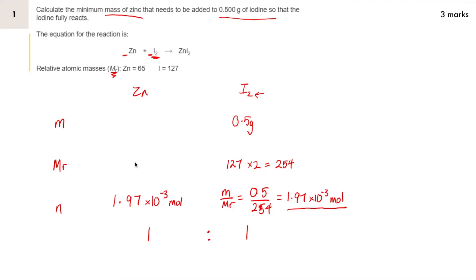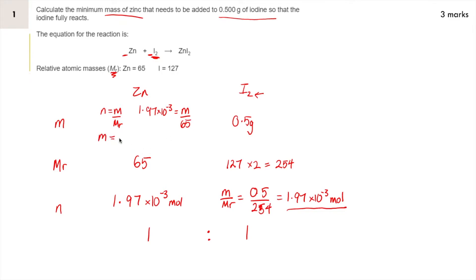So now we've got the number of moles of zinc. We can work our way up and write down the MR of zinc. We're given that in the question, or you can get it from your periodic table — it's 65. The final step is to work out the mass. We know that number of moles is mass divided by MR. So I'm going to substitute my numbers in: my number of moles is 1.97 times 10 to the minus 3, and I need to divide by the MR, which is 65. So to get mass, I do 1.97 times 10 to the minus 3 times 65.